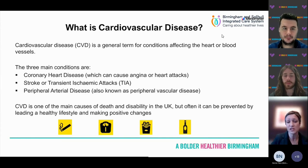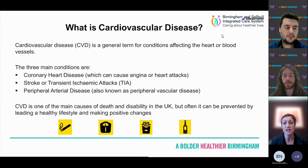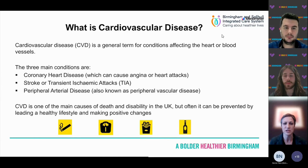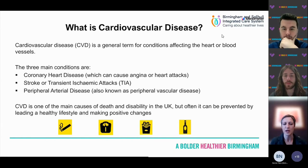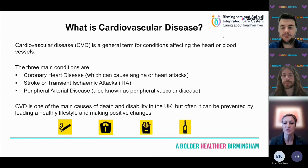CVD remains one of the main causes of death and disability in the UK, but it's largely preventable by leading a healthy lifestyle and making positive changes — every little helps, and prevention is always better than cure. Key lifestyle changes include stopping smoking, reducing weight, improving diet, and increasing physical activity.